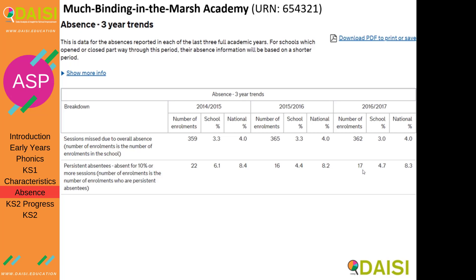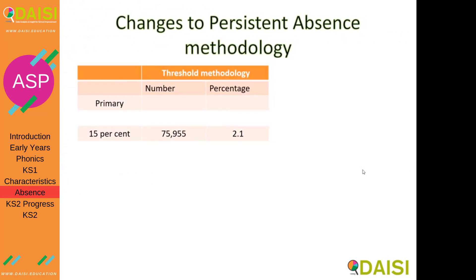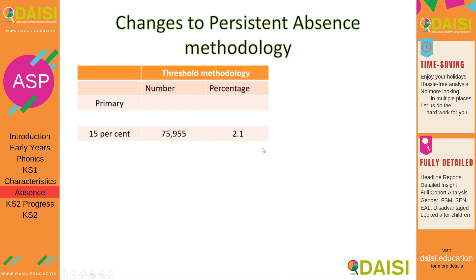The persistent absentee level wasn't always ten percent. In 2005 it was twenty percent, but national figures got better and better, so the government changed it in 2010 to fifteen percent. Figures kept improving, so in 2015 they changed it to ten percent. The national average was two point one percent at that time, but by changing it to ten percent it tripled overnight.